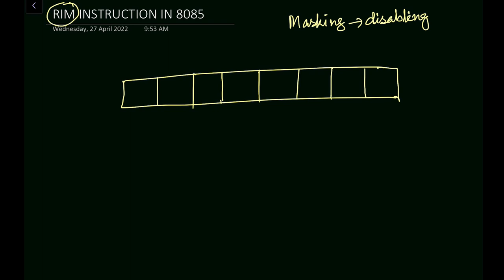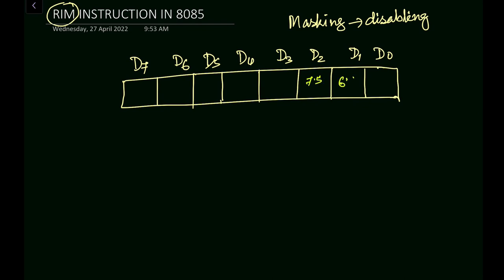Here we will see basically three interrupts: RST 7.5, RST 6.5, and RST 5.5. I have shown an 8-bit data from D0 to D7. In the case of Read Interrupt Mask, the lower order 3 bits — D0, D1, D2 — will hold the mask interrupts for RST 7.5, RST 6.5, and RST 5.5 respectively. These are the mask interrupts.